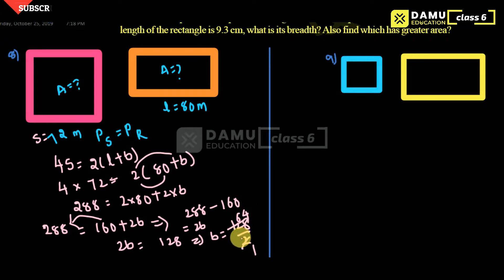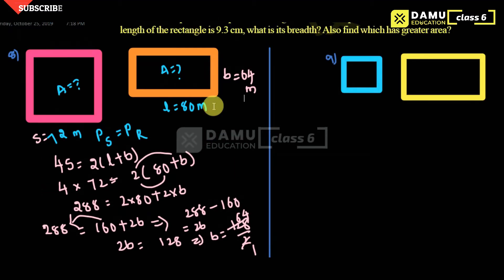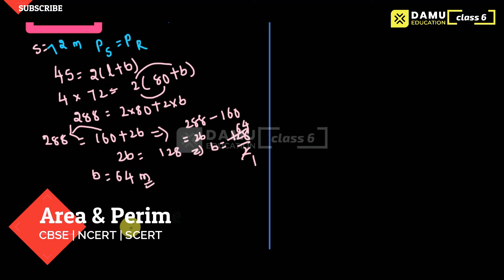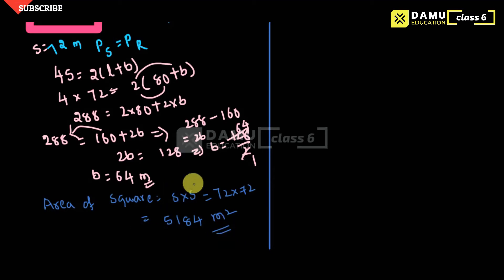So we get 64 — breadth equals 64 meters. Now we can find the area easily using their formulas. Area of square equals side into side, so 72 into 72, and you will get 5184 meters square. So this is the area of the square.